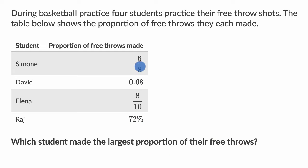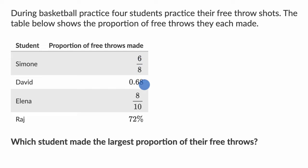So what's interesting about this is that they've given the proportion of free throws made in different formats, and my brain — and I think most people's brains — have an easier time doing this if we put them all in the same format. Usually it's easiest to put it all into a decimal format. So let's put all of these into a decimal format.